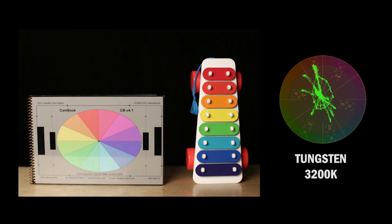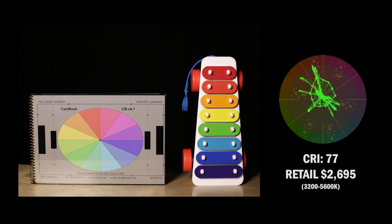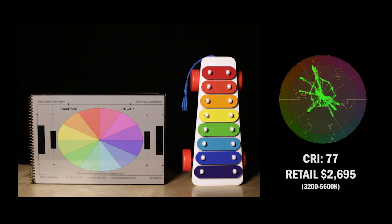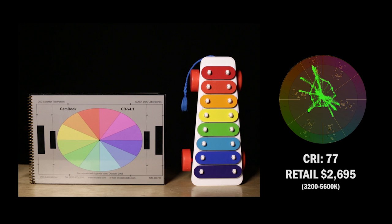So here's our tungsten again. And here is that CRI light with a rating of 77 and a retail of $2,695. Now, again, that's for a 3200 to 5600 adjustable LED. So if you were going to get maybe a single 3200K, you could pretty much knock around $1,000 off that price. So let's switch back and forth again.